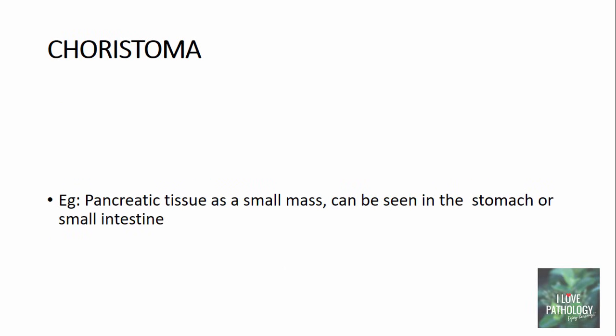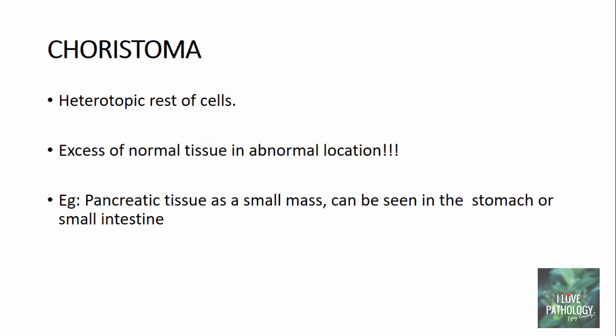Another word is choristoma. Choristoma is basically the heterotopic rest of cells — meaning excess of normal tissue found in an abnormal location. For example, pancreatic tissue appearing as small masses can be found in the submucosa of the stomach or intestine, more commonly in the duodenum. In simple terms, choristoma is the presence of normal tissue in an abnormal location.